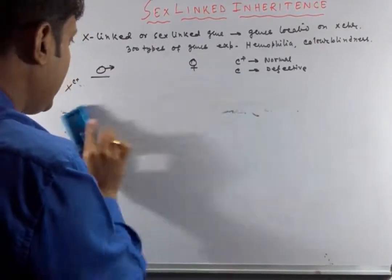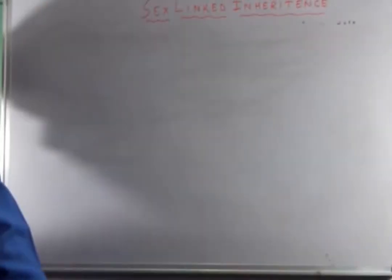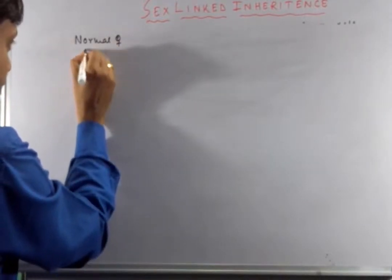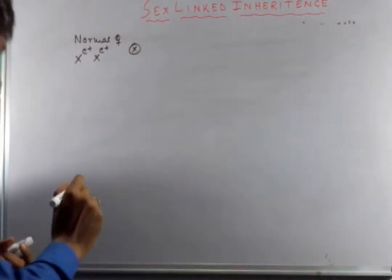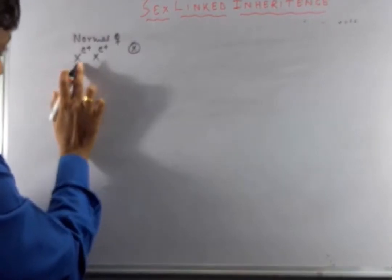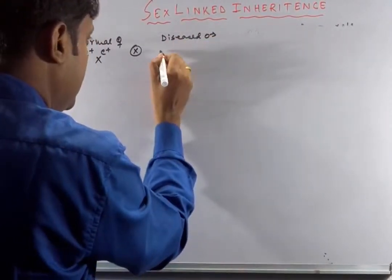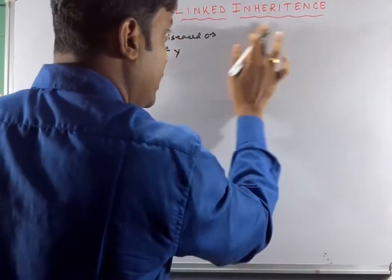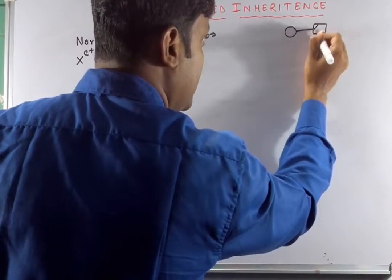Now let us examine the inheritance pattern by giving an example. If there is a normal female, the genotype must be Xc⁺Xc⁺, since the color gene is located on the X chromosome. And the diseased male will be XcY.